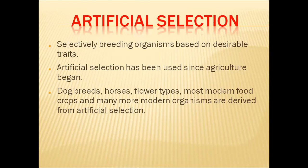Selective breeding is also called artificial selection. This process is an age-old practice — since agriculture began, artificial selection also began.